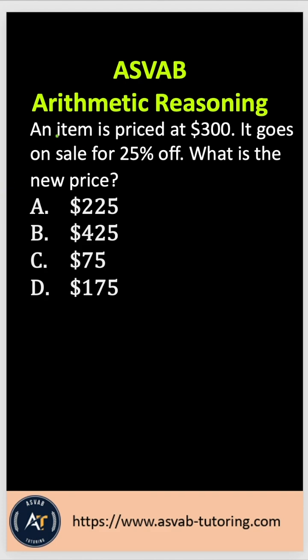The question says: an item is priced at $300, it goes on sale for 25% off. What is the new price?